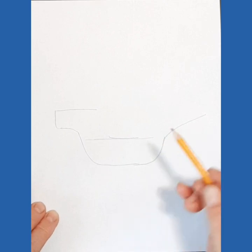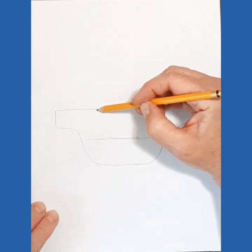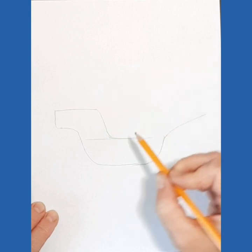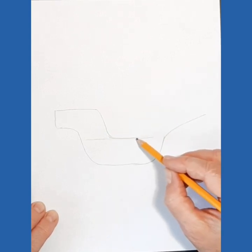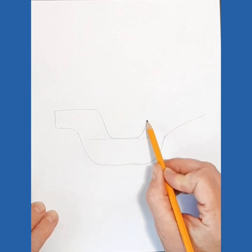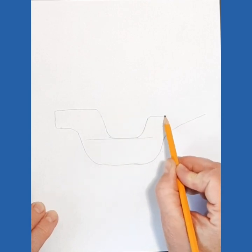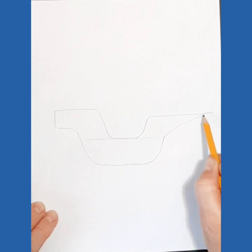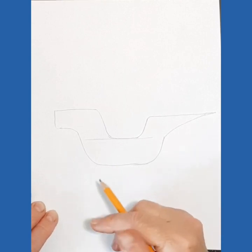Alright, we're going to come down here, meet up with the line there, come across. We're going to come up not as far as this side and come across and meet the end and we can put a little point on the end for the front of the ship. Alright, there's your basic shape.